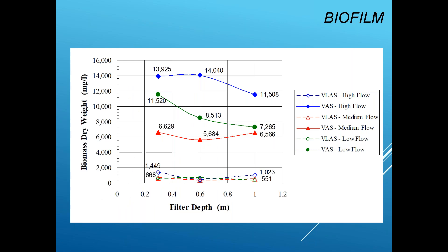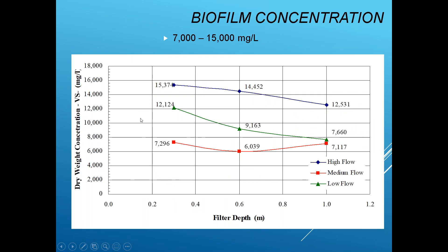Biomass density measurements show that different flows through the system generate different levels of biofilm. Even at low flows, biofilm is still present — just less dense. Concentrations of biofilm solids range from 7,000 to 15,000 milligrams per liter, providing an excellent means of treating wastewater.